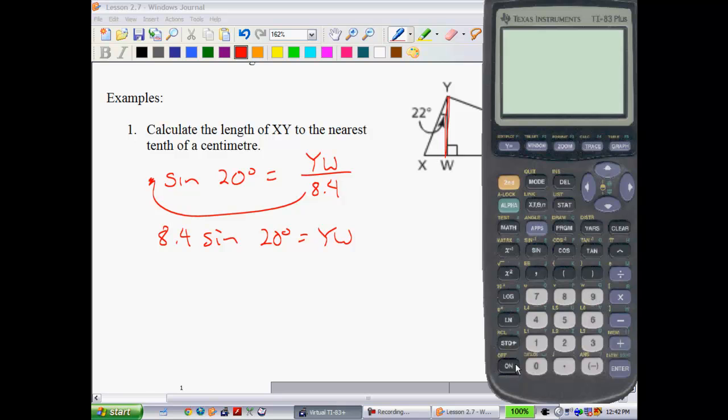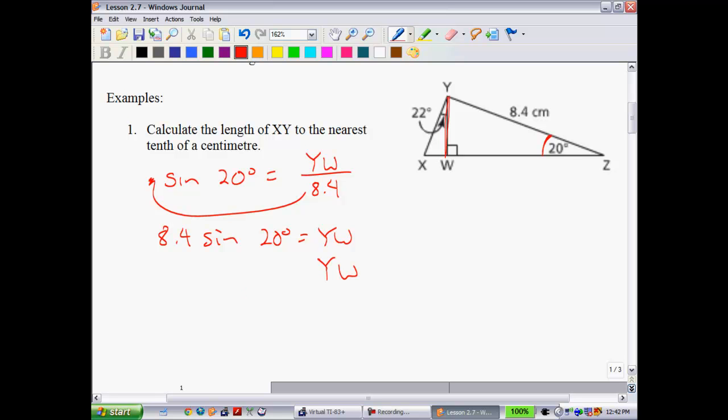In order to get our variable by itself, we just move the 8.4 up front. So we have 8.4 sine of 20 degrees is equal to YW. Checking this into our calculator, we get 8.4 sine of 20 degrees, making sure that you're in degree mode still. So we get roughly YW equal to 2.87297 dot dot dot. Again, I'm not rounding here. The reason I'm not rounding is because you don't want to round to get to your last step. If you round too early, then your final answer might be a little bit off.